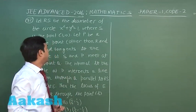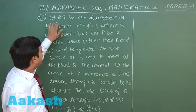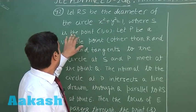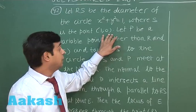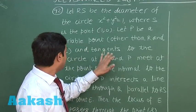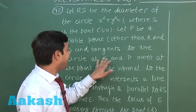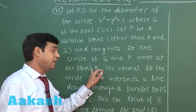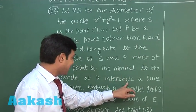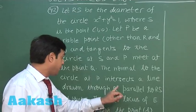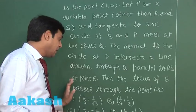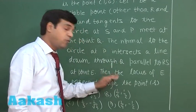Let us now talk about question number 42. Let RS be the diameter of the circle x² + y² = 1, where S is the point (1, 0). Let P be a variable point other than R and S, and tangents to the circle at S and P meet at the point Q. The normal to the circle at P intersects a line drawn through Q parallel to RS at point E. Then the locus of E passes through the point or points — four options are mentioned.